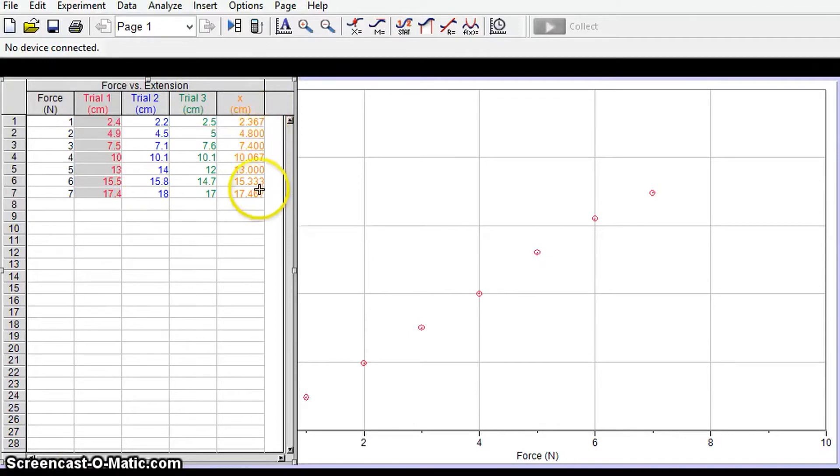Now to work out the uncertainty in these values from the random error we have, what I'm going to do is I'm going to simply subtract the minimum value from the maximum value and I'm going to divide by two and that's going to give me an idea of my uncertainty in the measurement.